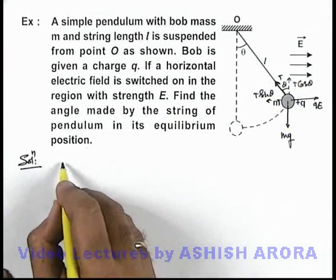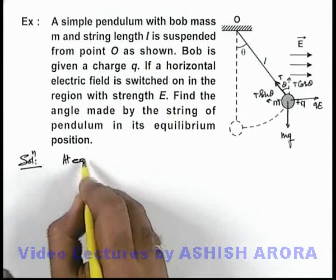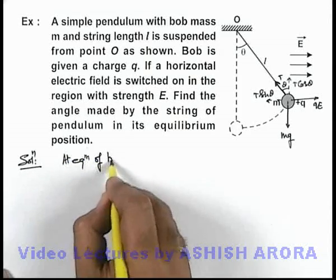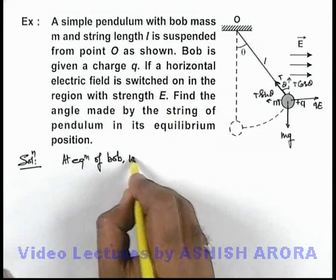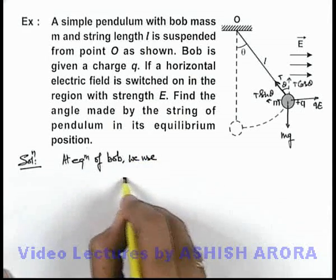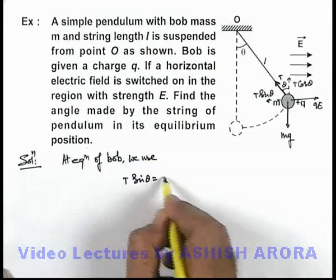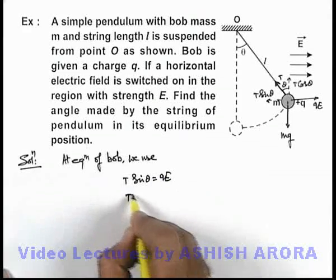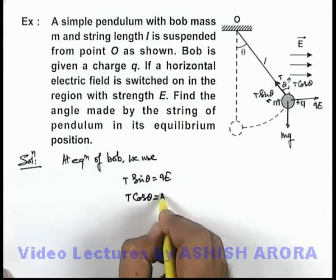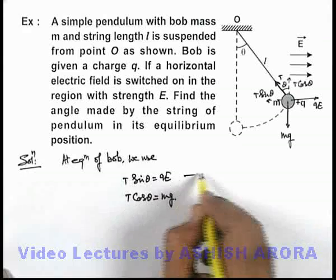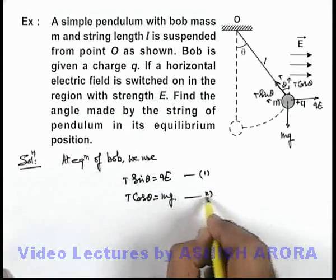So in this situation we can write: at equilibrium of the bob, we use T sin theta equals qE, and T cos theta equals mg. Now say if these equations are 1 and 2, we can use 1 by 2.